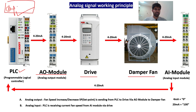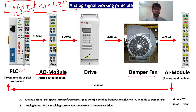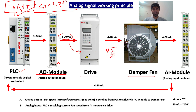From the HMI I will give the command that I want 600 RPM speed. When I give this set point, the PLC will give command to the AO module. From the AO module it will receive 4 to 20 milliamps, and this will go to the drive. From the drive, current will go to the fan — maybe 415 volt or 230 volt based on the fan capacity — and the fan will start.